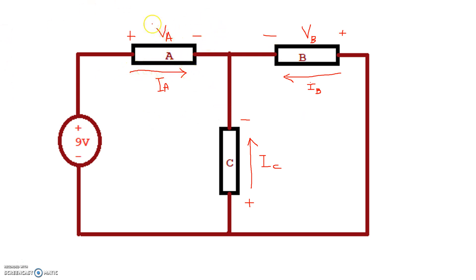In other words, if I pick the voltage polarity for an element, I need to pick the right direction of current for that element. Or, if I pick the current first for that element, I then pick the right polarity of the voltage for that particular element. That is passive sign convention.